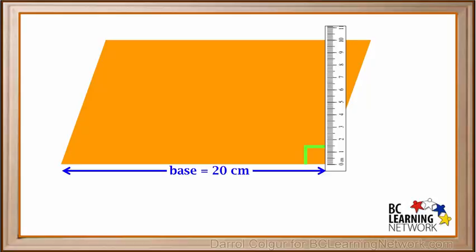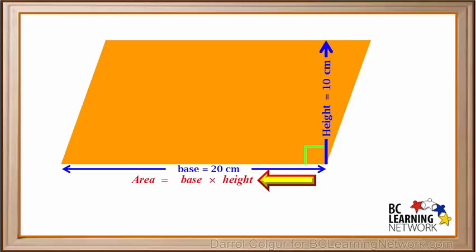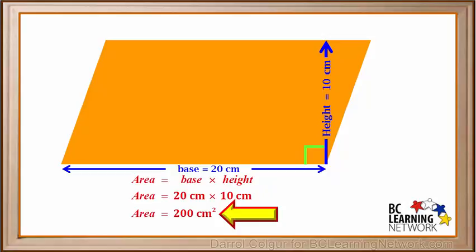And we'll measure the height with the same ruler, which we set at a right angle to the base. We see that the height of this parallelogram is 10 cm. So we'll mark the height as 10 cm. The formula for the area of a parallelogram is the base times the height, which is 20 cm times 10 cm, which comes out to 200 cm squared, or 200 square centimeters. So we can say that the area of this parallelogram is 200 square centimeters.